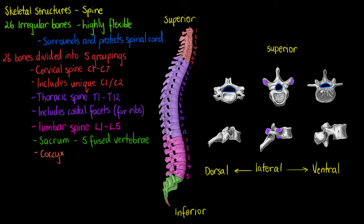With that, we've made up the 26 bones of our spinal column: seven in our cervical region, twelve in our thoracic region making 19, five in our lumbar spine making 24, one for our sacrum for the fused bones, and one for our coccyx as well — making 26 all up.